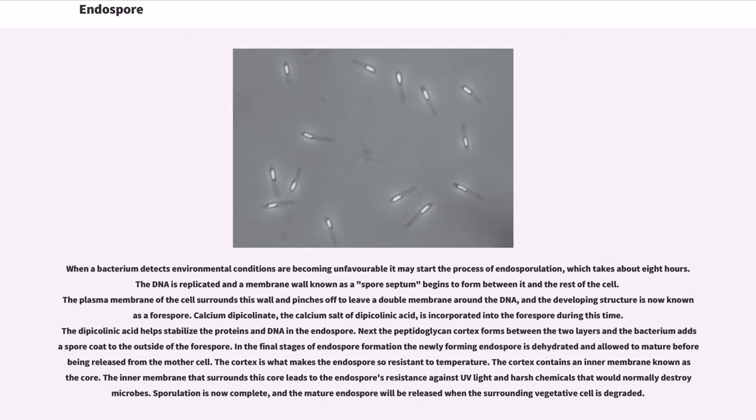The DNA is replicated and a membrane wall known as a spore septum begins to form between it and the rest of the cell. The plasma membrane of the cell surrounds this wall and pinches off to leave a double membrane around the DNA, and the developing structure is now known as a forespore. Calcium dipicolinate, the calcium salt of dipicolinic acid, is incorporated into the forespore during this time. The dipicolinic acid helps stabilize the proteins and DNA in the endospore.